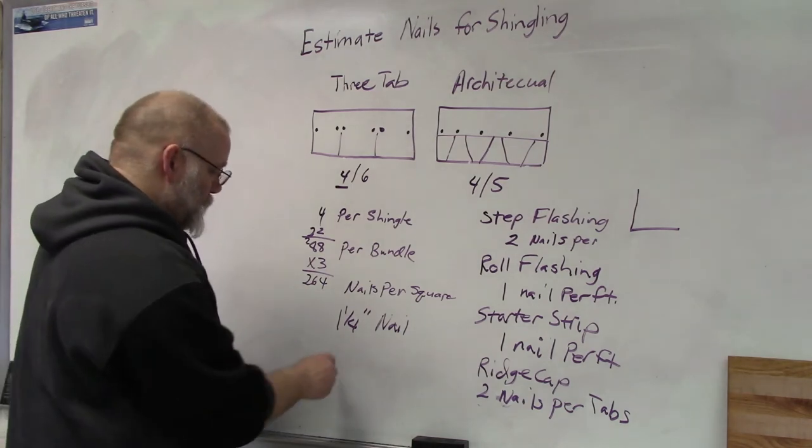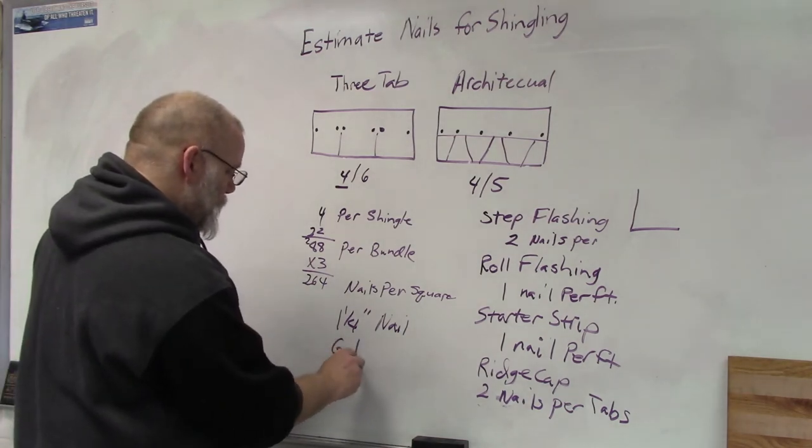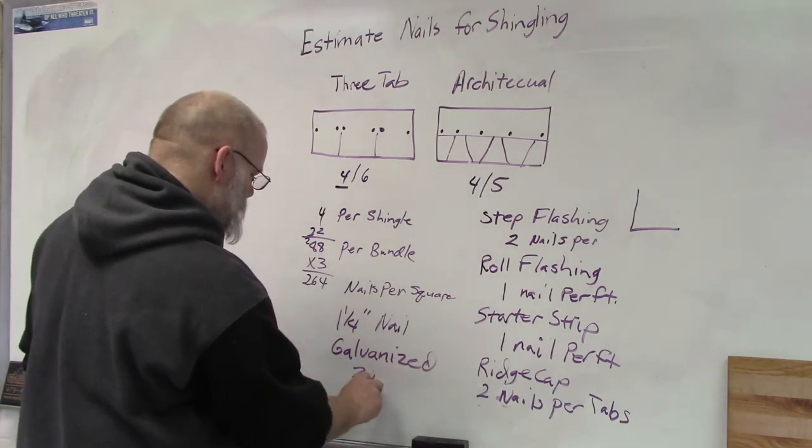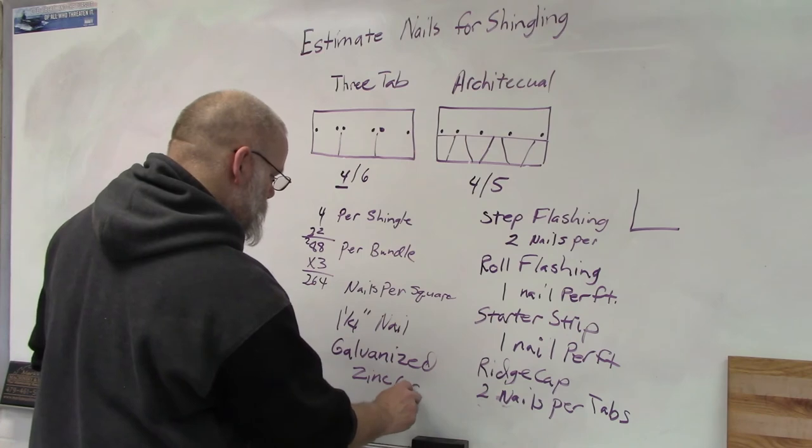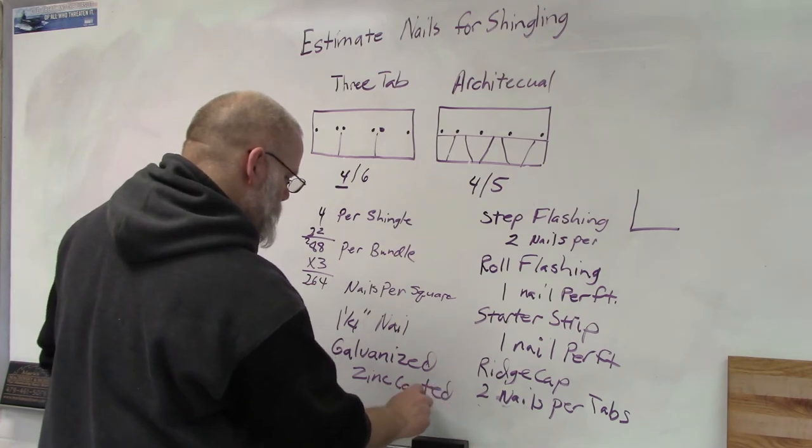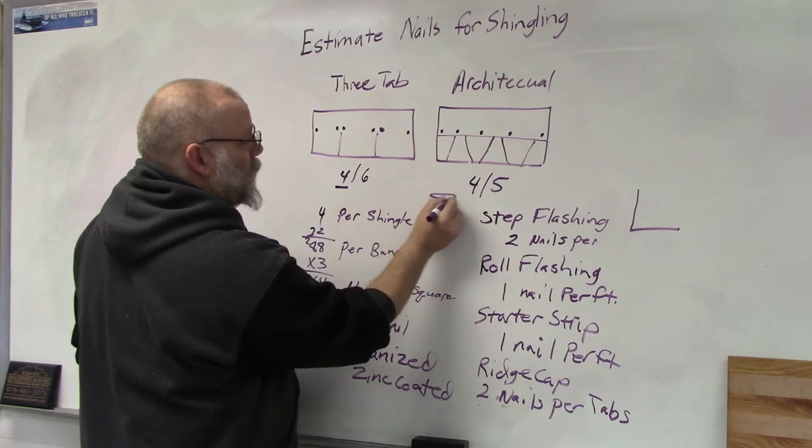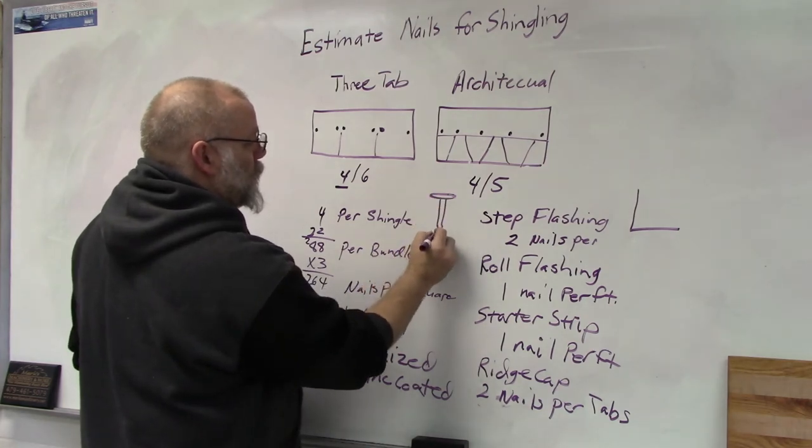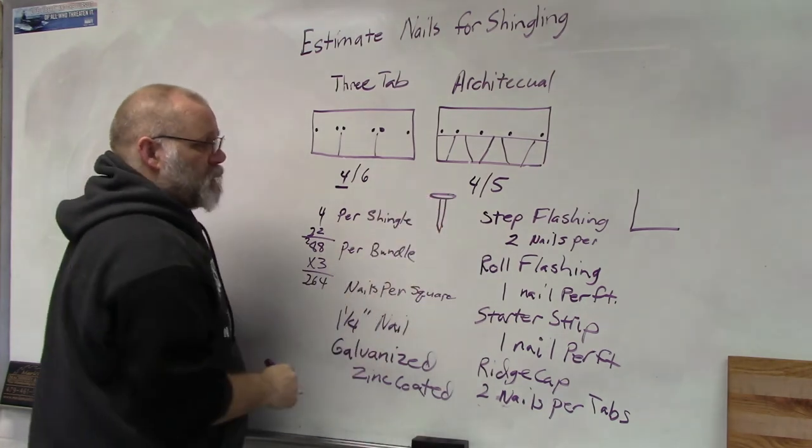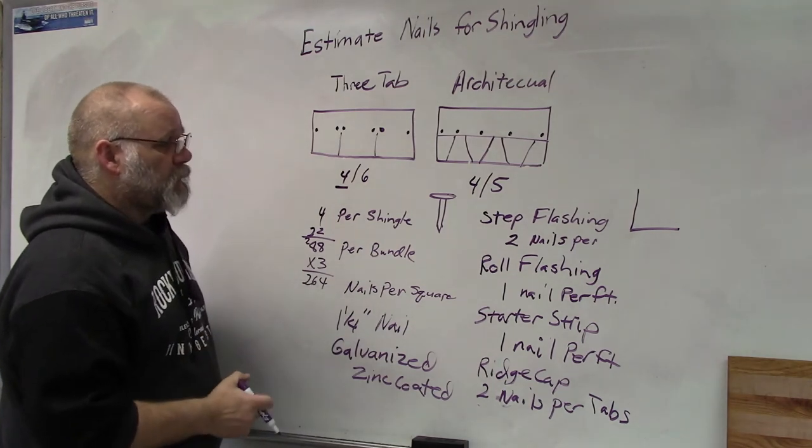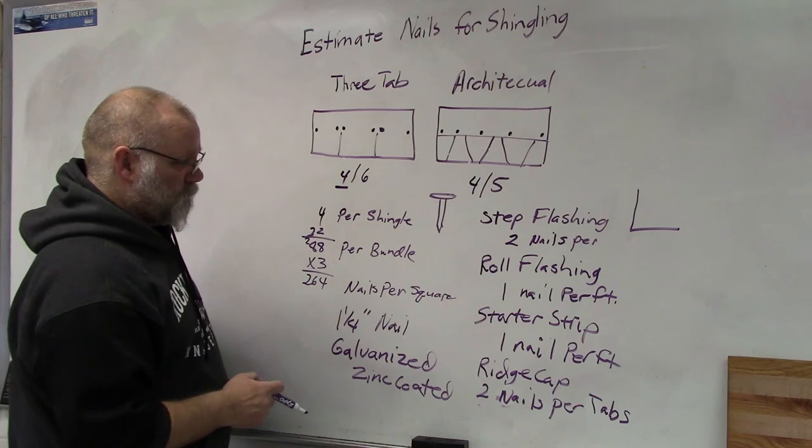Okay, and make sure that they're either galvanized or zinc coated. And if you're not familiar, the roofing nail has a big round head on it so that it will grab.